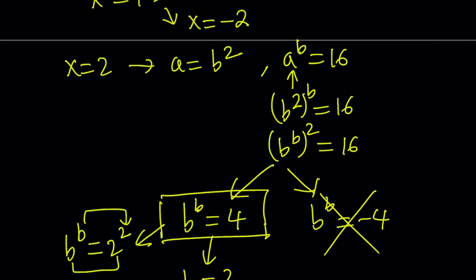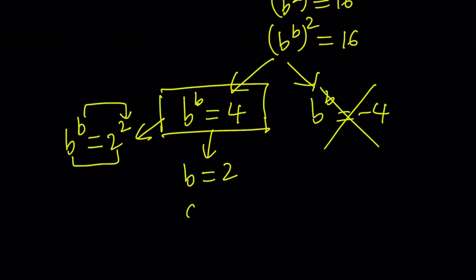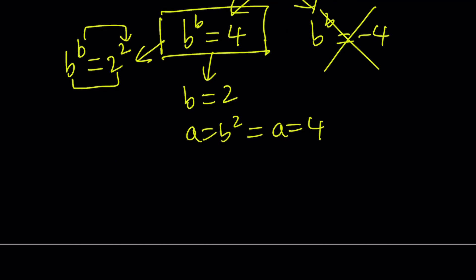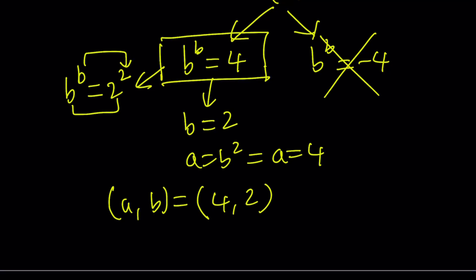We have two equations we can use to evaluate a: either a equals b squared, or a to the power b equals 16. Using the first one, which seems easier — since b equals 2, we get a equals b squared equals 4. So we get the solution (a, b) = (4, 2). This ordered pair satisfies our system. But we only looked at one case.